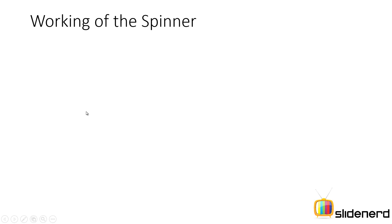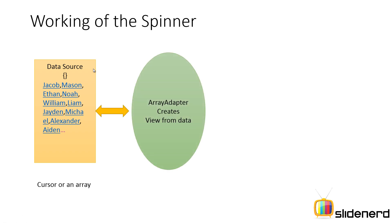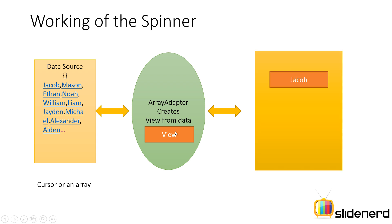This data inside the list is managed with the help of an adapter. So how does the spinner work with the adapter? You have a data source — it can be a cursor or an array. The spinner uses an array adapter that takes the data, creates a view from it, and passes that view to the spinner, which keeps all the data in the list.